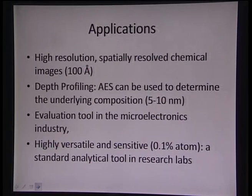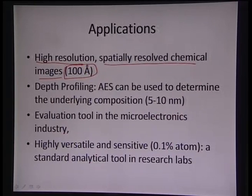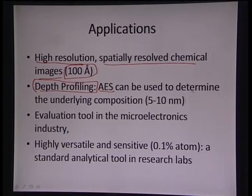Since AES is highly surface sensitive and comes from a very narrow regime, it has very high resolution and can spatially resolve chemical images to approximately 100 angstroms or 10 nanometers. Additionally, Auger electron spectroscopy can be utilized for depth profiling — by removing the surface layer using ion etching, we can see what is beneath the material and determine underlying compositions.